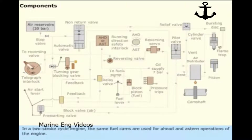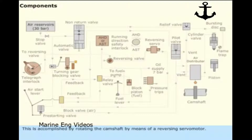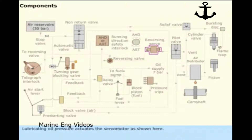In a two-stroke cycle engine, the same fuel cams are used for ahead and astern operations of the engine. This is accomplished by rotating the camshaft by means of a reversing servo motor. Lubricating oil pressure actuates the servo motor as shown here.